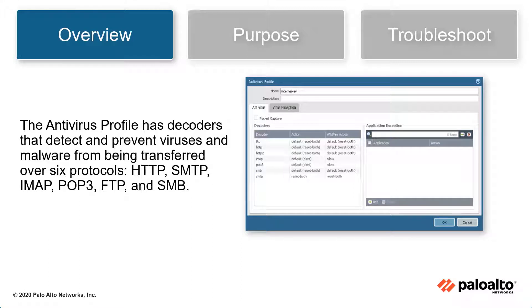The antivirus profile has decoders that detect and prevent viruses and malware from being transferred over six protocols: HTTP, SMTP, IMAP, POP3, FTP, and SMB.